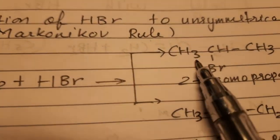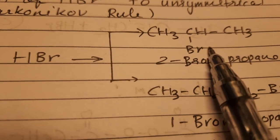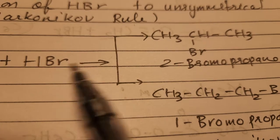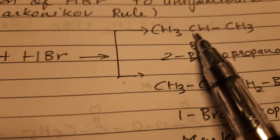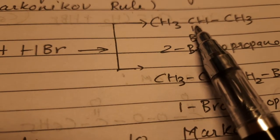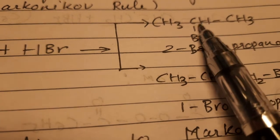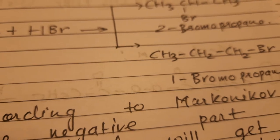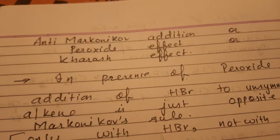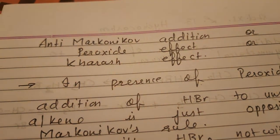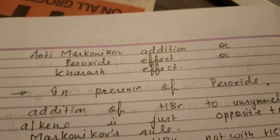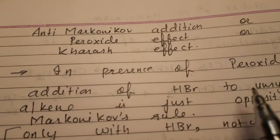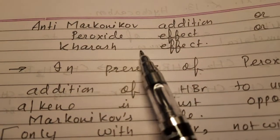So the mechanism confirms Markovnikov's rule: the negative part of the adding molecule attaches to the carbon with fewer hydrogen atoms. Now I will explain anti-Markovnikov's rule. These are foundational concepts in organic chemistry, very important for 12th standard, so follow carefully. Anti-Markovnikov addition is also known as the peroxide effect or Kharasch effect.